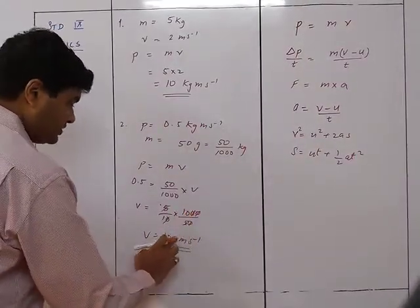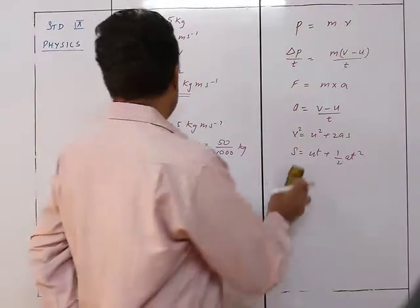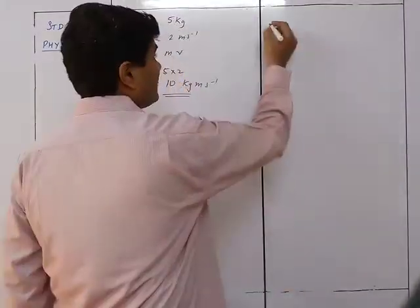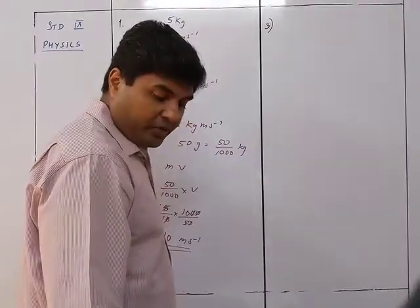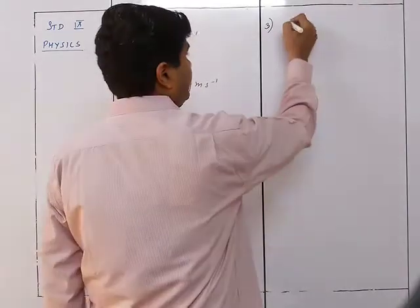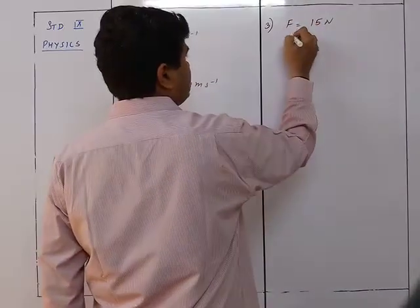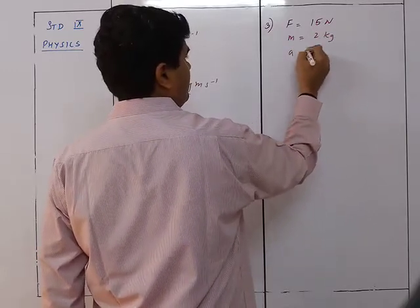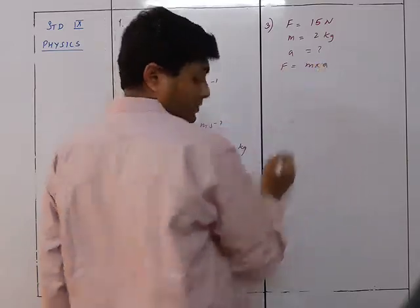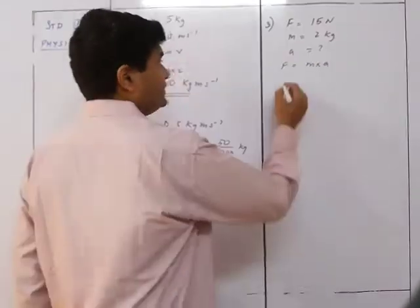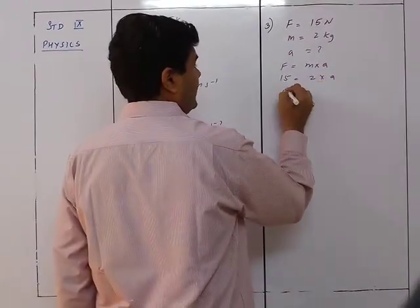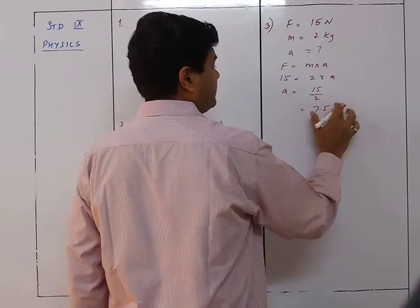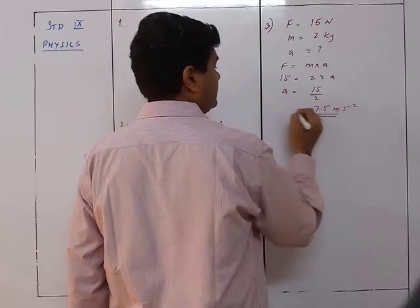Question 3: A force of 15 Newton acts on a body of mass 2 kg. Find the acceleration. Using F equals m times a: 15 equals 2 times a, so a equals 15 upon 2, which is 7.5 meter per second squared. That is the acceleration.